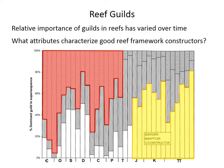The relative importance of these guilds has changed over time. The graph shows from the Cambrian through to today on the right-hand side, the percentage in each reef that is composed of the three major guilds grouped into these time intervals.